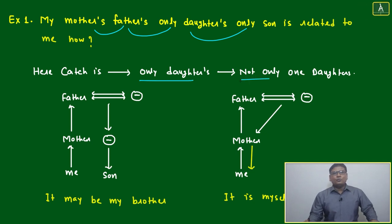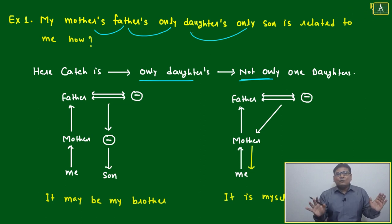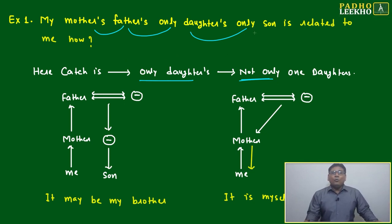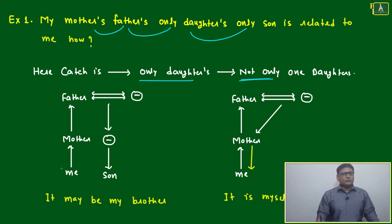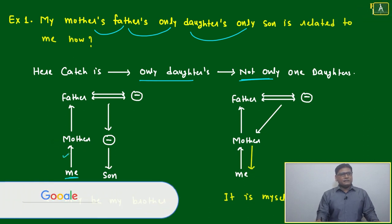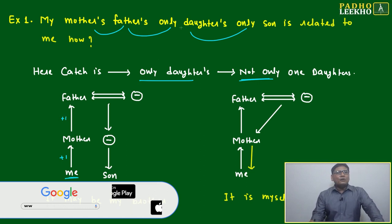'Only daughter' does not mean only one daughter. It means only daughter — as in, the daughter community, not the son community. So: my mother's father's only daughter's only son — let us start from me. Mother's: go to the next generation plus one. Mother's father's: again one generation up.